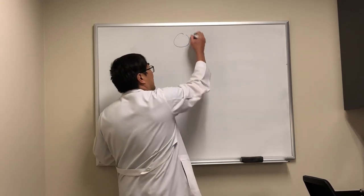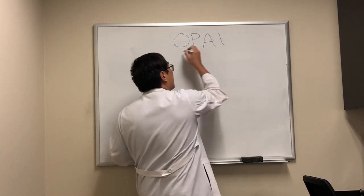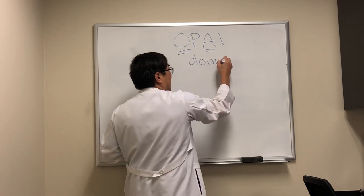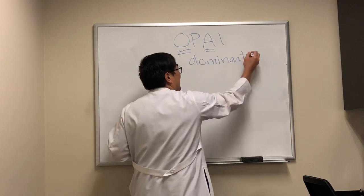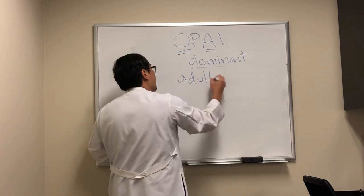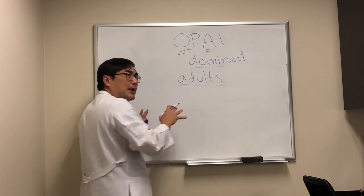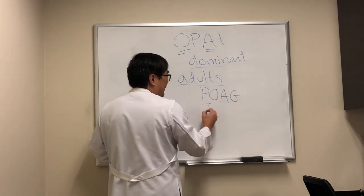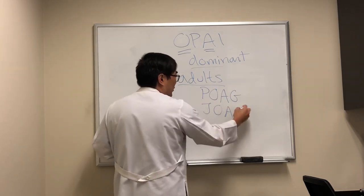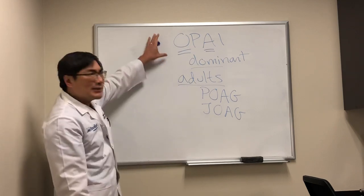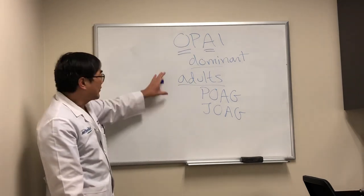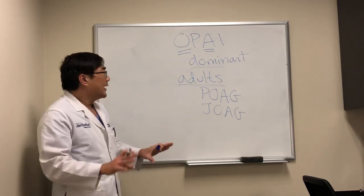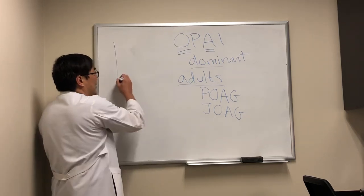Today we're going to be talking about how OPA1, which is the optic atrophy gene for dominant optic atrophy, can show up in adults and can be mistaken for — or combined with — possible primary open-angle glaucoma, or mistaken for juvenile open-angle glaucoma. Normally you would think you'd be able to tell these things apart. However, they share some similarities, and I'll highlight the differences.